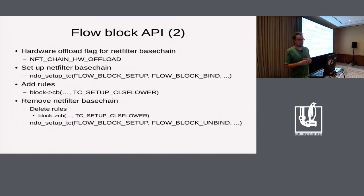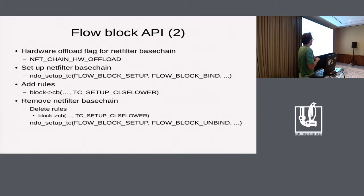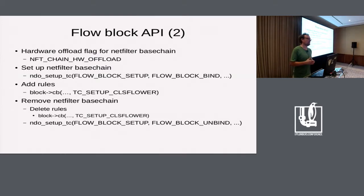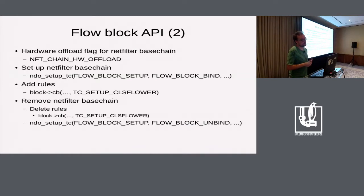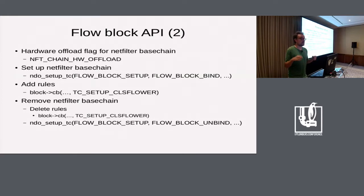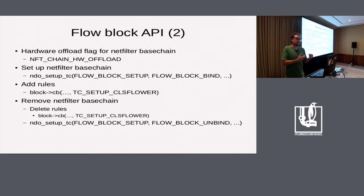From Netfilter, the flow block API works as follows: there is a hardware offload flag for base chains that tells the system all rules contained in this base chain should be placed in hardware. It's a toggle the user can enable or disable — if the card cannot support it, the user gets a not-supported error. When the Netfilter base chain is created, NDO setup TC is called with the flow block setup action type and the flow block bind type. The driver then creates the flow block object, configures it, and passes it back to Netfilter ready to be used.